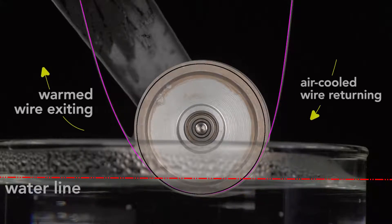Let's break this down. On the right, the air-cooled wire returns. It wraps onto the wheel. As the water heats the wire, it starts to straighten, but is restrained by being in a loop.